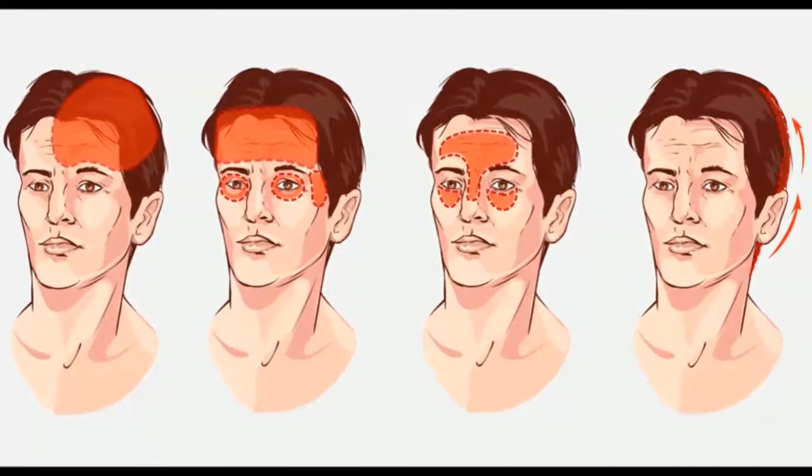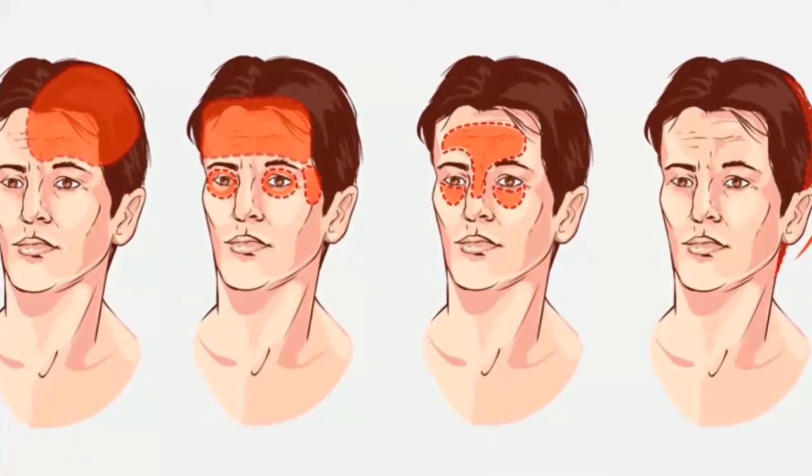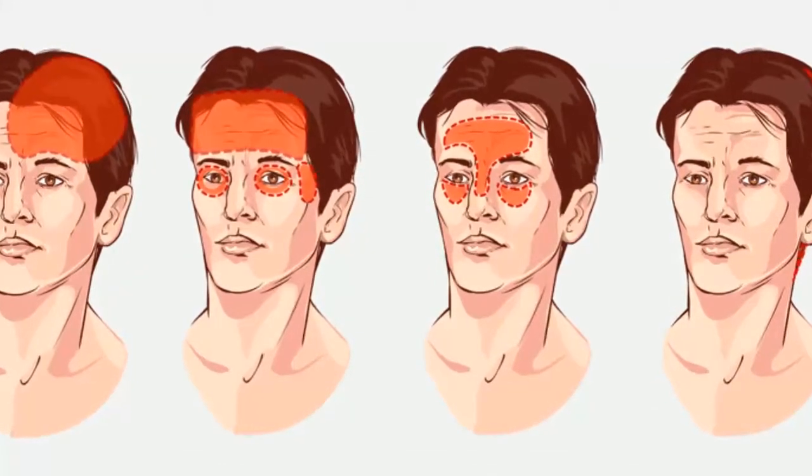3. Cluster Headache. Cluster headaches appear intermittently several times a day for months. This is usually followed by a headache-free period of up to six months. This type of headache is sharp and painful, and often lasts less than an hour. The pain is usually unexpected and unilateral, affecting only one side of the head, and often appears above the eye and near the temples.